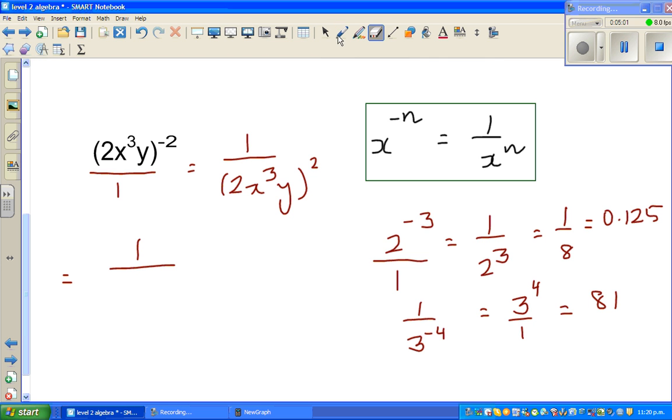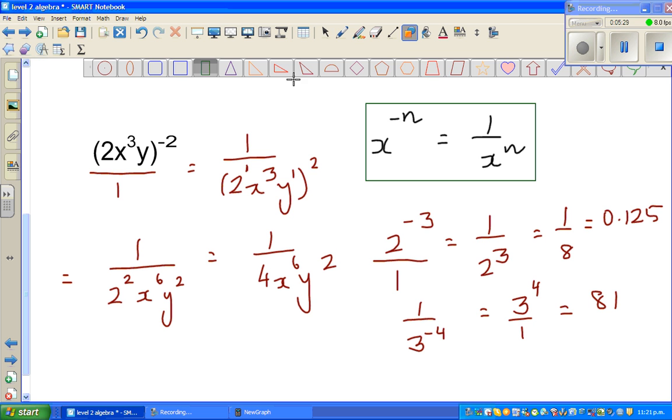So this is applying the rule you have power of power. Here 2 has a power of 1, x has a power of 3 and y has a power of 1. When you've got a power of power you multiply so this is nothing but 1 times 2 is 2 so 2 to the power 2 x to the power 6 y squared and the final answer is 1 over 4 x to the power 6 y squared. This is your final answer.